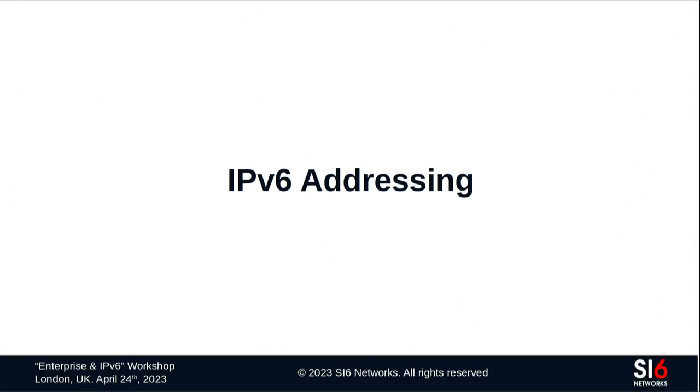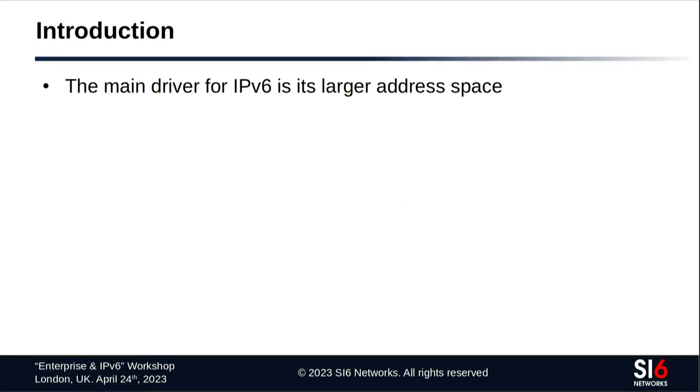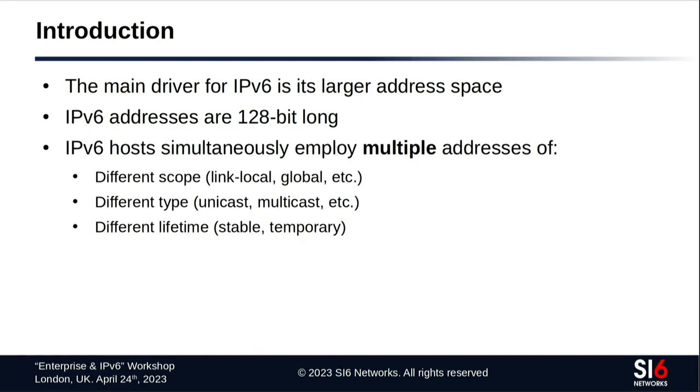Next topic: IPv6 addressing. The main driver for IPv6 is the larger address space — 128-bit addresses. Unlike IPv4 where you normally get one address, in IPv6 every system typically uses a combination of multiple addresses with different properties: one link-local address, one stable global address, one temporary global address — with different combinations of scope, time, and lifetime. The typical subnet size is a /64.